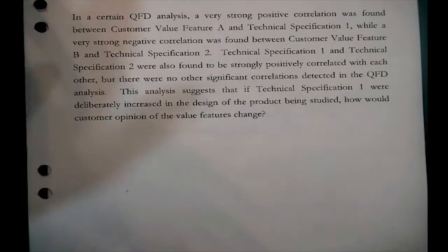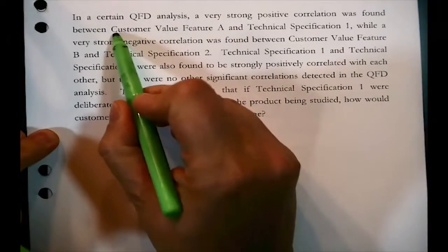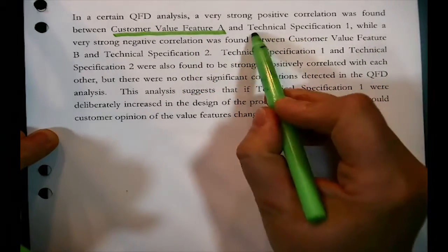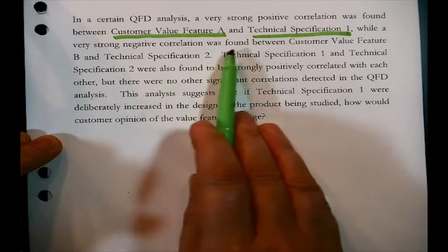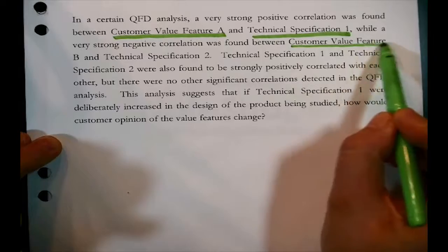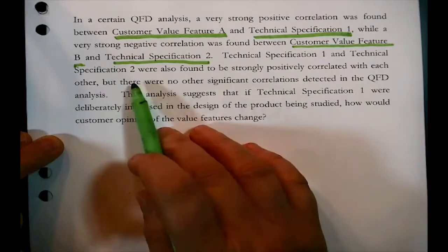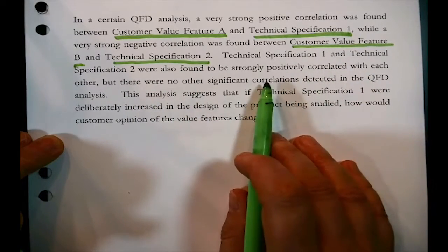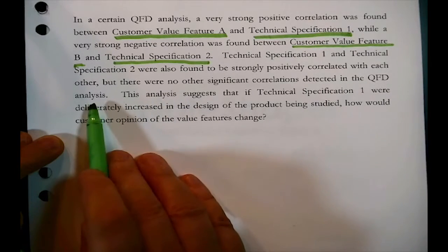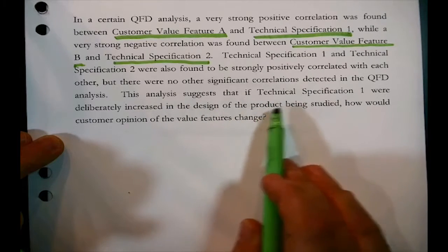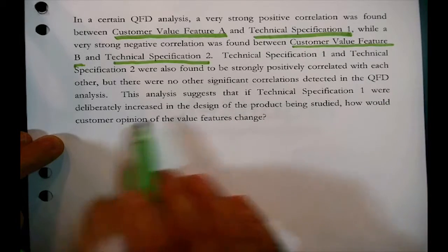In a certain QFD analysis, a very strong positive correlation was found between customer value feature A and technical specification 1, while a very strong negative correlation was found between customer value feature B and technical specification 2. Technical specification 1 and technical specification 2 were also found to be strongly positively correlated with each other, but there were no other significant correlations detected. This analysis suggests that if technical specification 1 were deliberately increased in the design of the product being studied, how would customer opinion of the value features change?